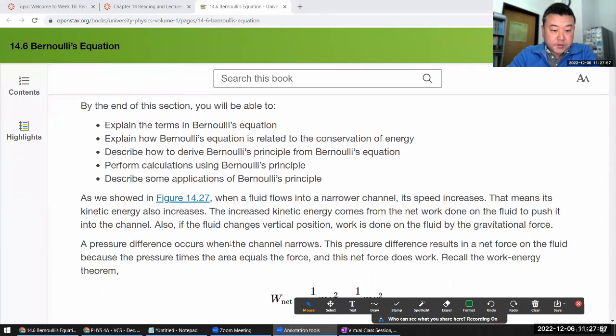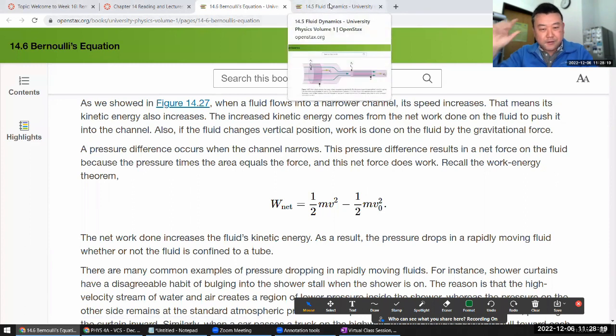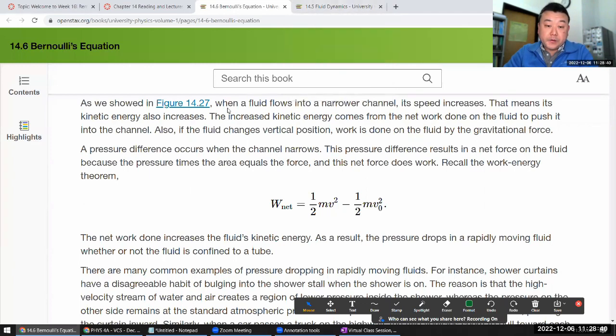So section 14.6, Bernoulli's equation. So it says, as we showed in this figure, I have a feeling it's a figure in previous section. So let me right click and open a new tab so that I don't lose my place here. Yeah, it's in previous section. I think I'm okay with that preview over there. Yeah. So something narrowing and velocity changing. Yeah. Good. I think they probably covered what we call continuity equation, the speed of the fluid, flowing fluid increasing, that's dictated by properties of fluid and geometric constraints on it.